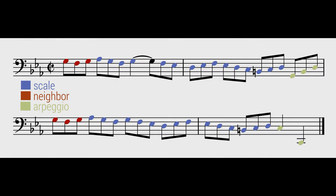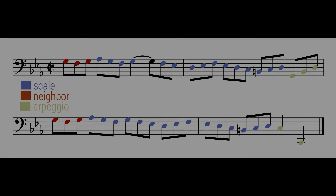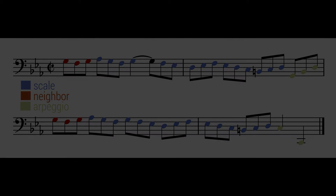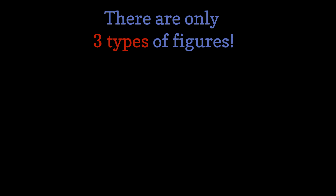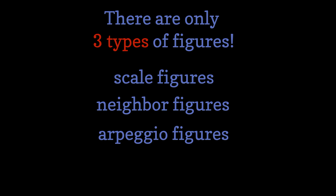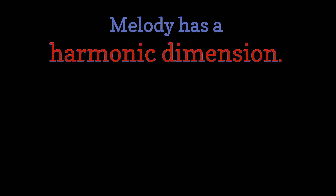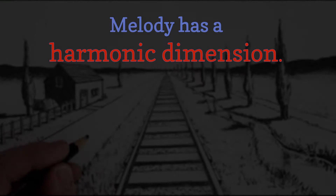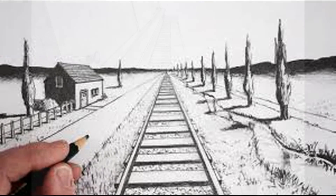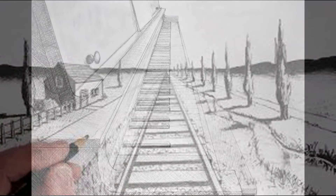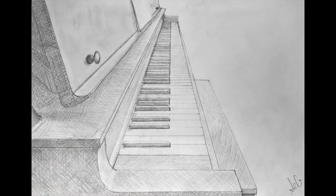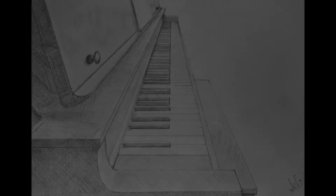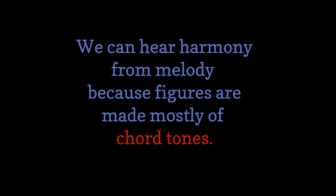The three types of figures I've marked are the only three kinds of figures that exist. That's it. Every piece of music you know is made of scale figures, neighbor figures, and/or arpeggio figures. Why? Because melody has a harmonic dimension. You can sense the harmony from a melody even when the melody is played by itself. This is possible because the majority of notes in a melodic figure will be chord tones, and there are only so many ways to arrange chord tones into melodic figures.